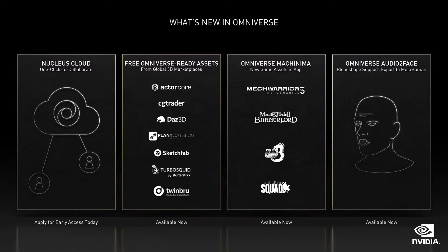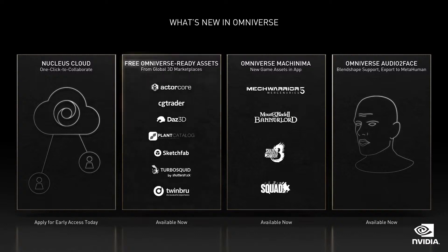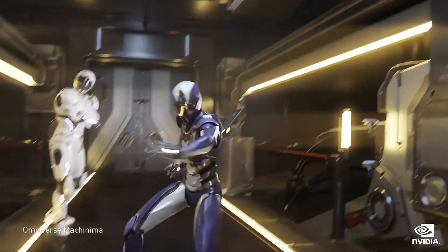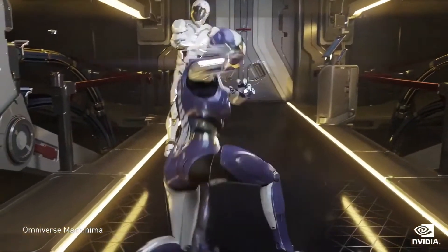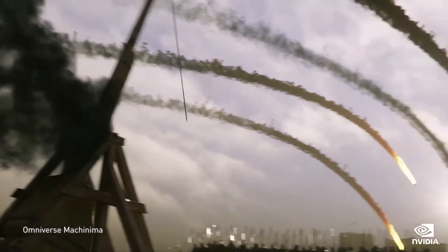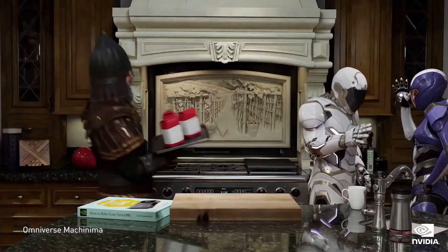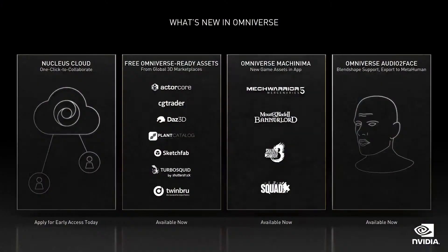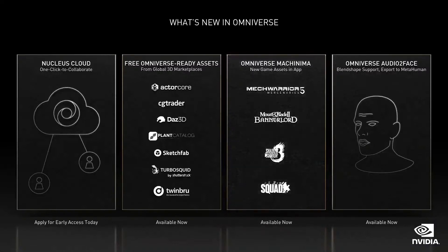Leading 3D marketplaces are now featuring Omniverse-ready assets. Check out the collection of free assets now available in the Omniverse launcher. Omniverse Machinima has been a big hit with creators who love to game — it lets you remix and recreate your own game cinematics with thousands of game assets and environments. We are now adding MechWarrior 5 and Shadow Warrior 3 assets to the Machinima library.